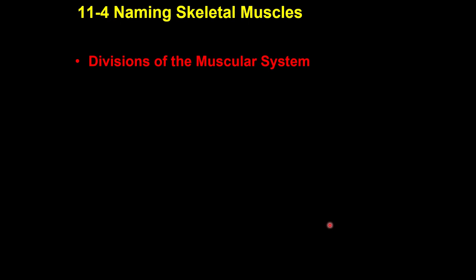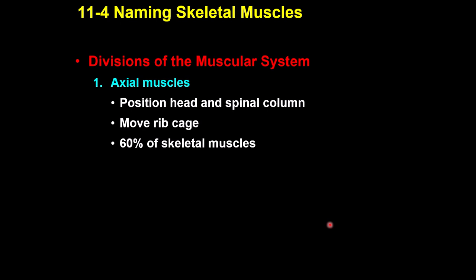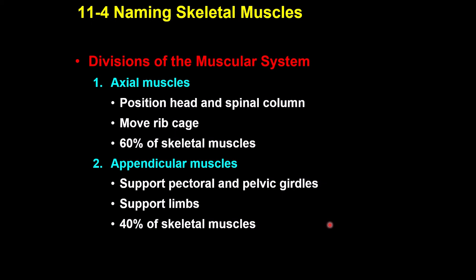Another topic is the division of muscles into axial and appendicular, similar to the skeletal bones. Axial muscles are located in the head, face, skull, neck, thoracic cavity, abdomen, pelvis, and back — about sixty percent of muscles. They are responsible for movements like head and neck movement, abdominal movement, and breathing. The other forty percent are appendicular muscles, covering the shoulder and hip girdles and upper and lower limbs.